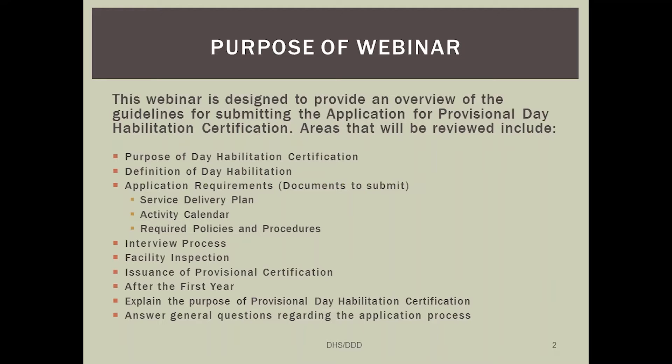So we are going to be going over all of the different areas of the application, starting with the whole purpose of day hab certification, the definition of day habilitation, the application requirements which include the service delivery plan, the activity calendar, and required policies and procedures. We are going to talk about the interview process, the facility inspection, as well as when we issue provisional certification. We will also be talking about what happens the first year of certification.